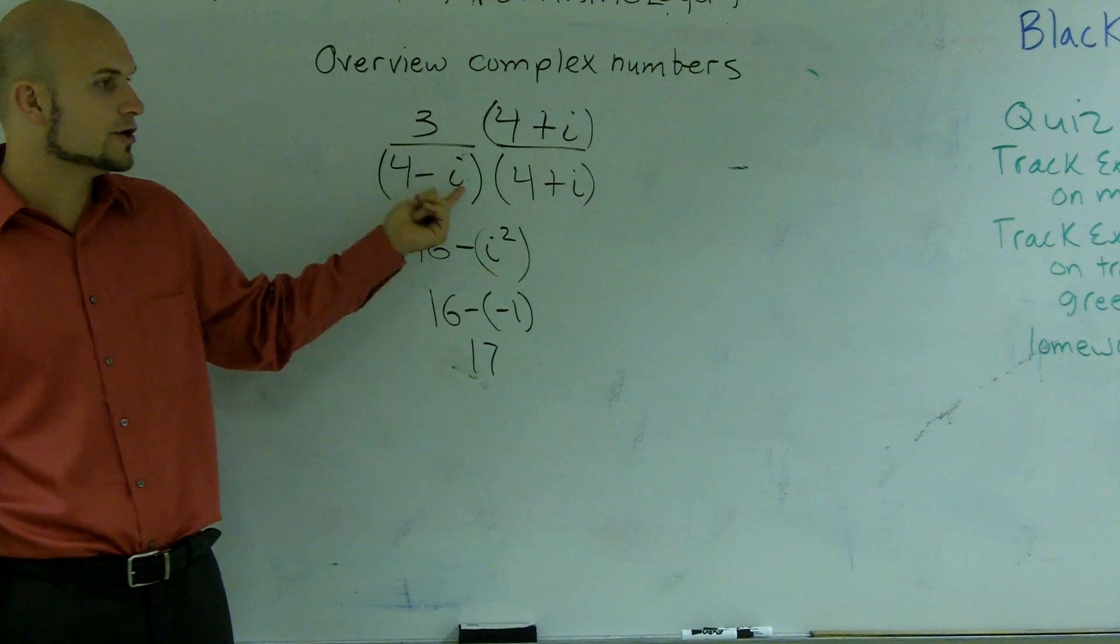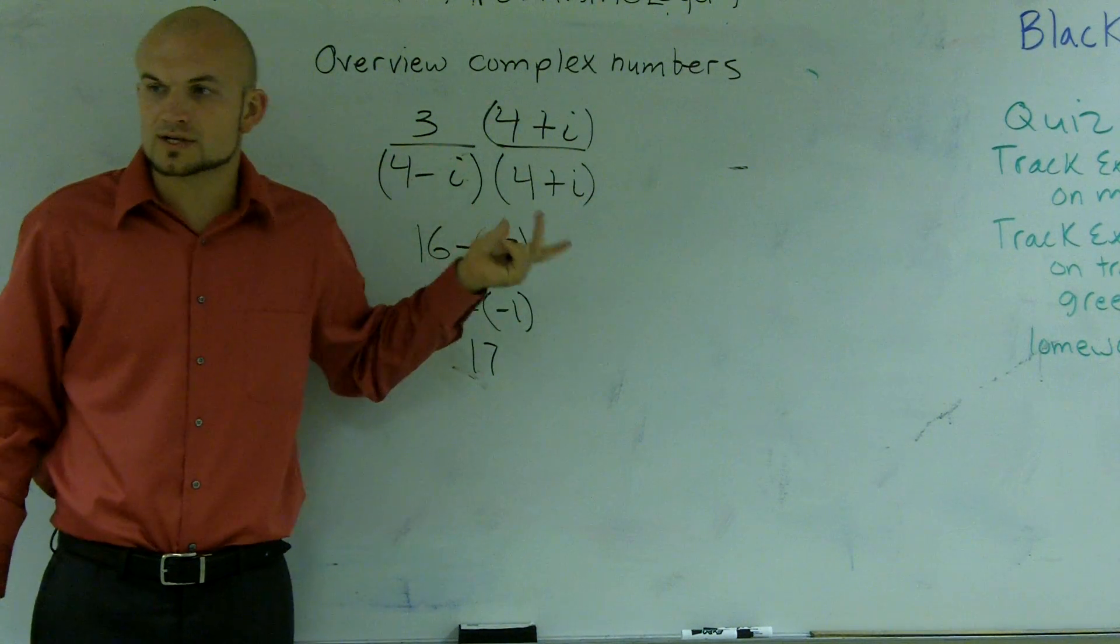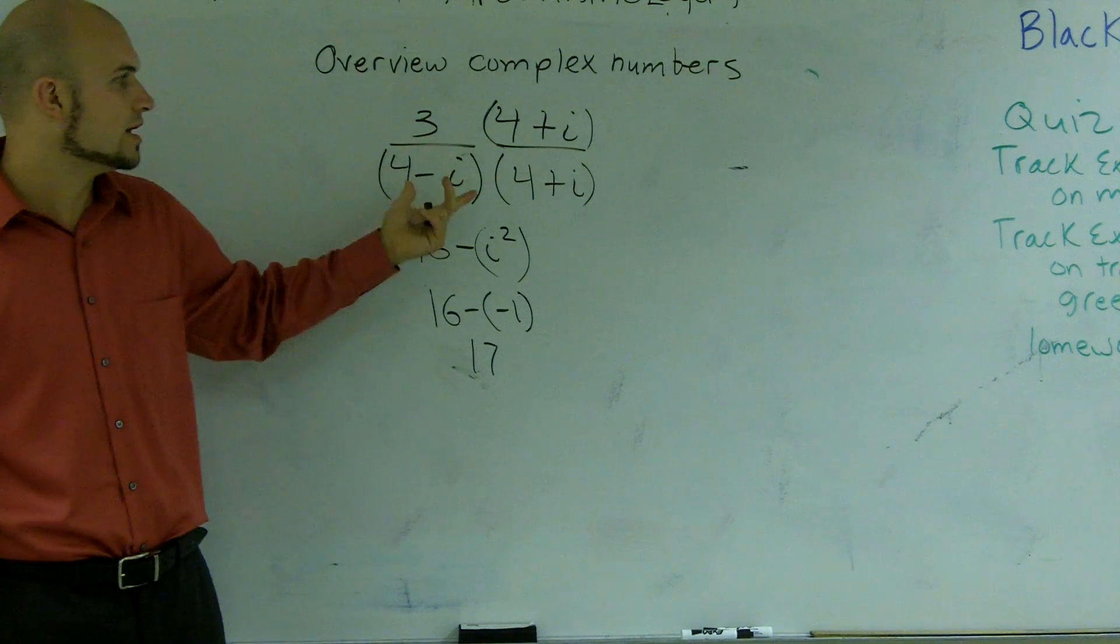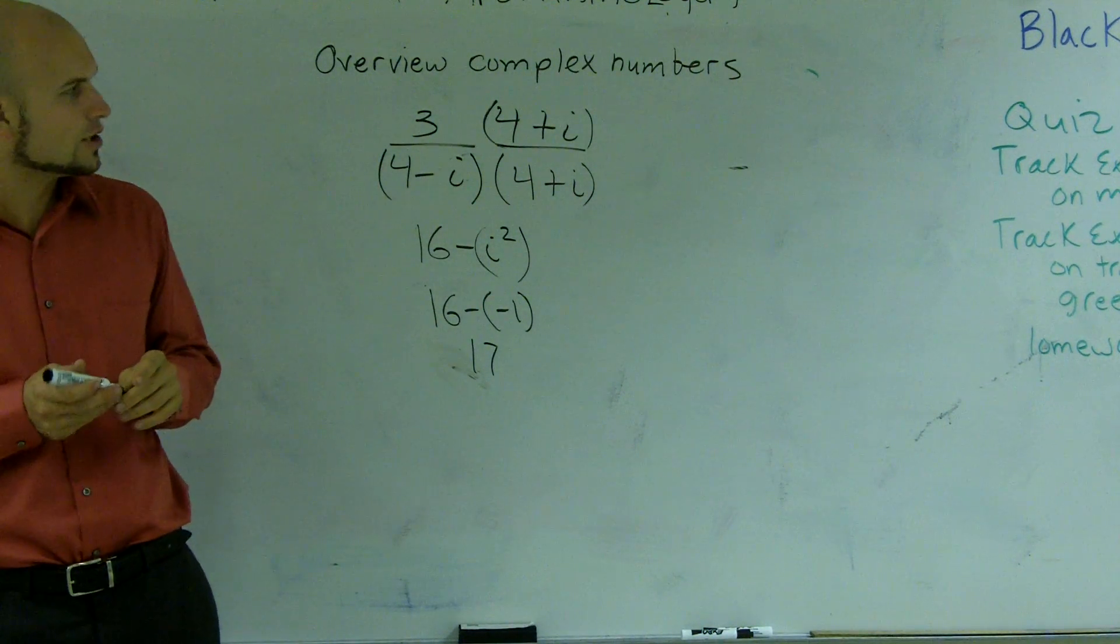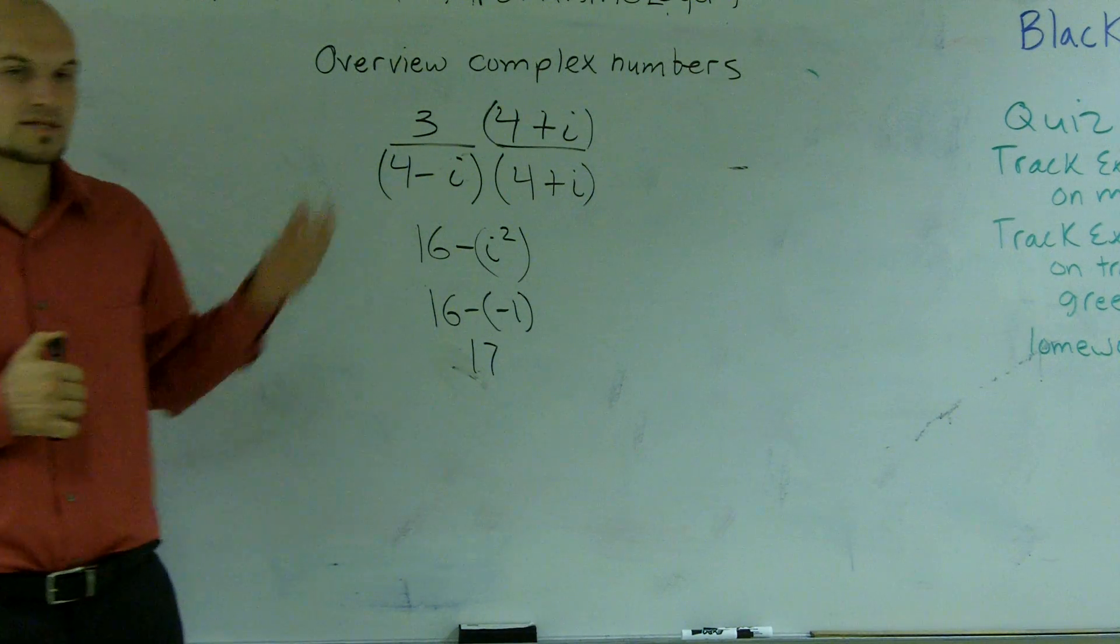So whenever you're given a binomial, you're always going to want to use conjugate pairs of imaginary numbers to get rid of it when you have it as a denominator. So that's just kind of a basic overview of the complex numbers.